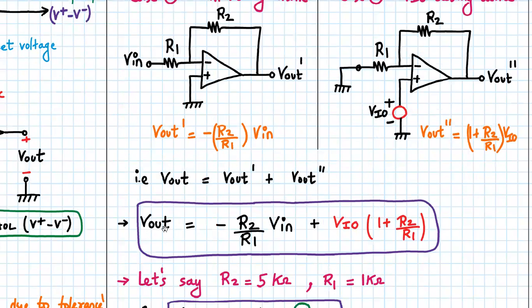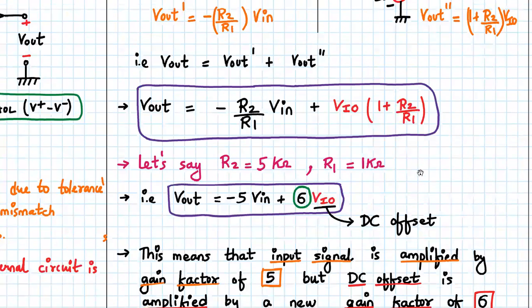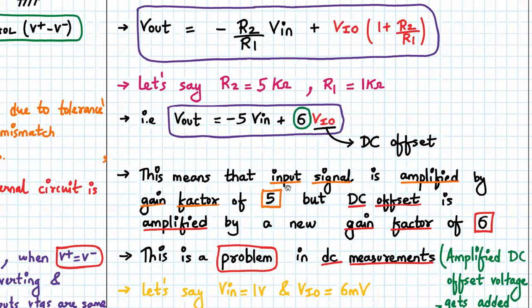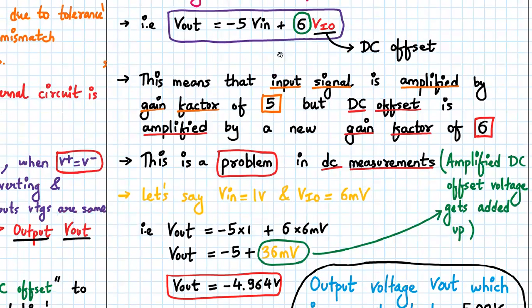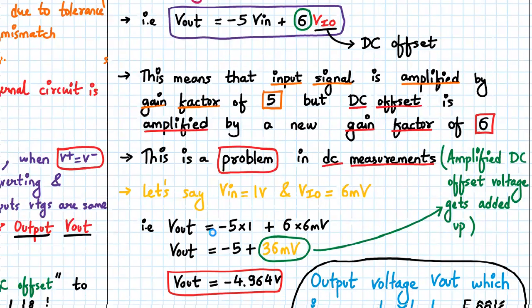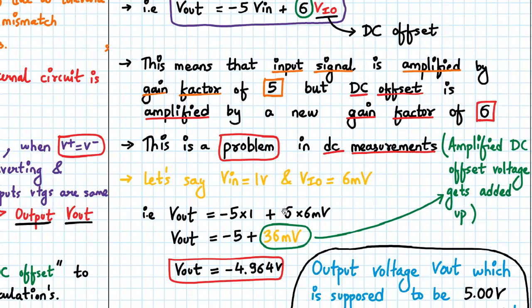By superposition theorem, we add them together, so the total Vout = -(R2/R1)Vin + VIO(1 + R2/R1). Let's put some numbers: if R2 = 5kΩ and R1 = 1kΩ, then Vout = -5Vin + 6VIO. This means my input signal is getting amplified by a gain factor of 5, but the DC offset is amplified by a new gain factor of 6, and this is a problem in DC measurements. Let's say Vin = 1 volt and VIO = 6 millivolts, so Vout = -5(1) + 6(6mV) = -5 + 0.036 = -4.964 volts.